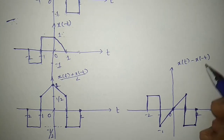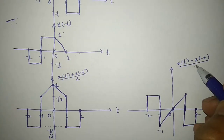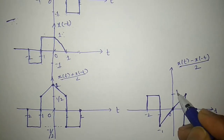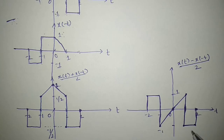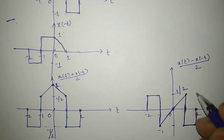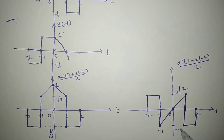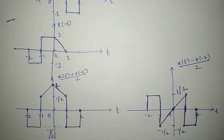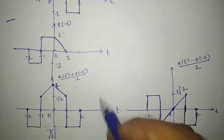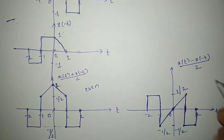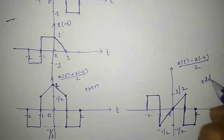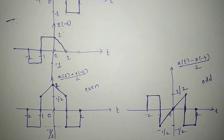The last task is to divide by 2. The amplitude of 1 becomes 1/2, and minus 1 becomes minus 1/2. Finally, this is how the even part and the odd part look. In the next video we will consider a few more examples. Thank you.